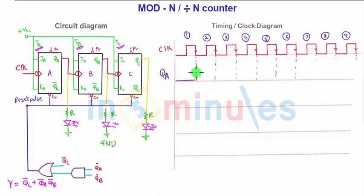So QA will change for each falling edge, so first QA will be zero because the set state is zero zero zero. So QA will be zero, it will move to one, again zero.